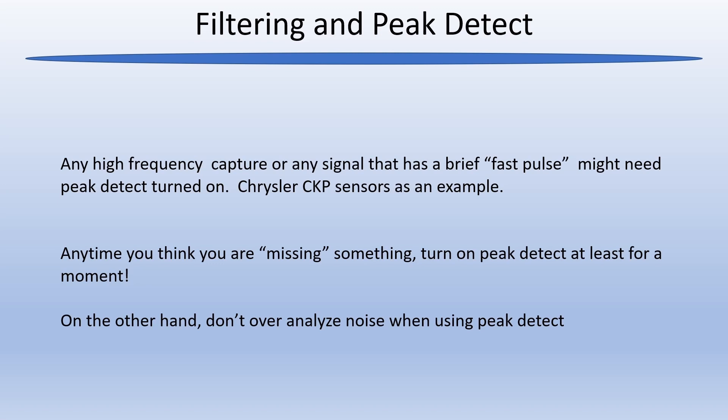Just remember when using snap-on scopes that whenever you're viewing high frequency signals, or even lower frequency signals that have a very quick spike as part of the normal signature, you may need to turn on peak detect. You might also need it with captures like a Chrysler crank sensor, especially if you have more time on the screen. Some crank sensors have a very short amount of on time. Depending on the amount of time on the screen, it may look like you have missing teeth on the crank reluctor if you don't turn on peak detect.